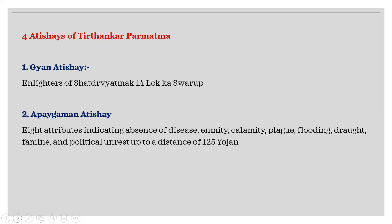The second Atishai is Apaya Gaman Atishai. Wherever Bhagwan is walking or present, in a 125 Yojana Bhoomi there is an absence of eight things: Roge, Shoge, Ativrusti, Anavrusti, Atang, and others. That absence in 125 Yojanas — roughly 1,000 miles — is known as Apaya Gaman Atishai.